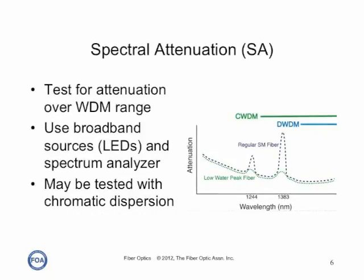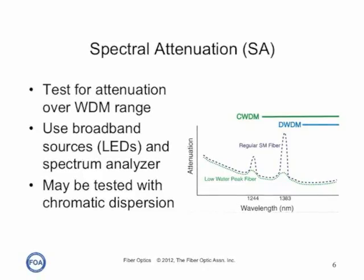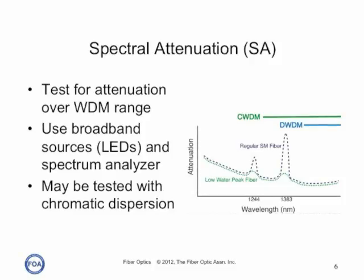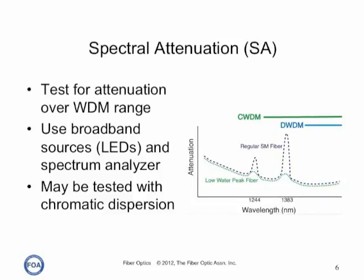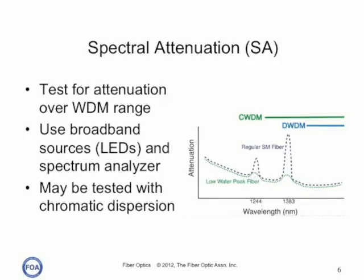The use of wavelength division multiplexing, particularly coarse wavelength division multiplexing, may require measuring the spectral attenuation of the fiber. This is particularly important where CWDM is expected to be used on fibers that have not been qualified as low water peak fibers. Spectral attenuation is measured using a broadband source, typically an LED, and a spectrum analyzer. This test can be performed similarly with a chromatic dispersion test set, so both tests may be done at the same time.